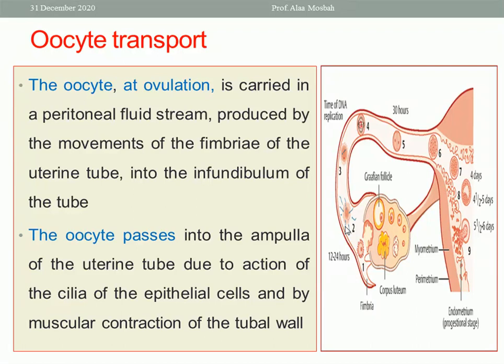Regarding oocyte transport: the oocyte at ovulation is carried in a peritoneal fluid stream produced by the movement of the fimbria of the uterine tube into the infundibulum of the tube. The peritoneal fluid creates a stream moving the fimbria, which picks up the ovum and passes it through the fallopian tube. Two factors help the movement of the ovum: the cilia lining of the tube and the muscular contraction of the tubal wall.